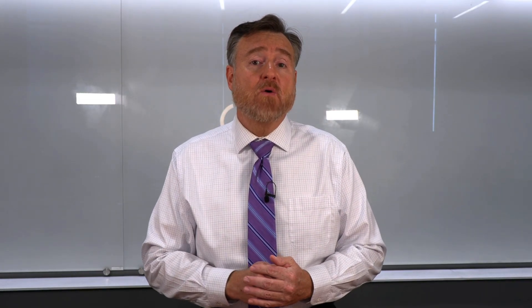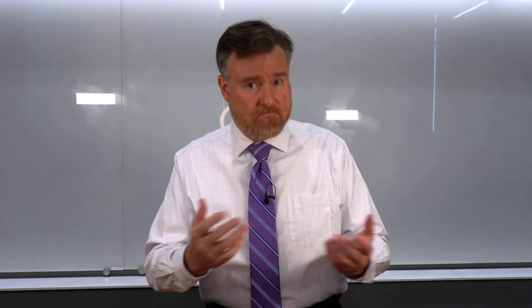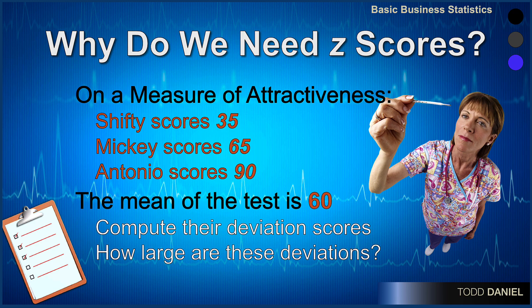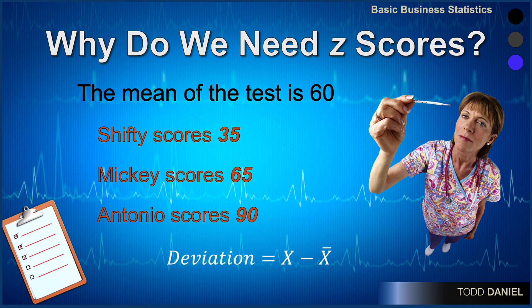So we go to the manual that exists for this imaginary test. In the manual we find that this test has an average score of 60. Now we can compare each raw score to the mean — we can subtract the mean from each raw score to get a measure of deviation. So Shifty has a deviation score of negative 25, Mickey has a deviation score of positive 5, and Antonio has a deviation score of 30.